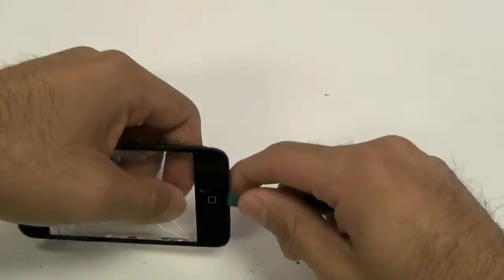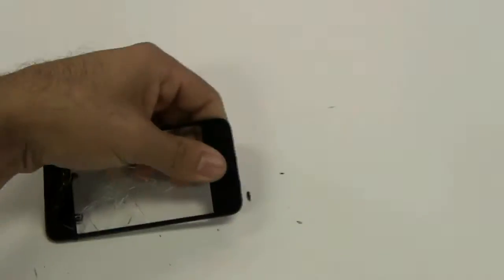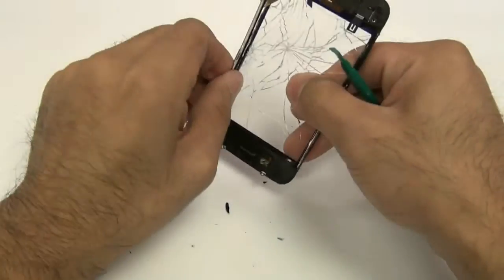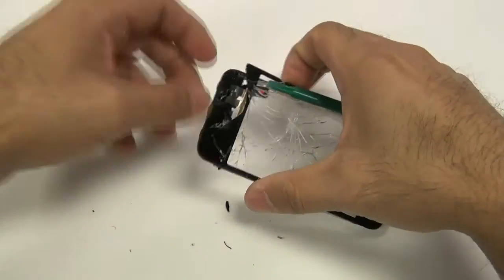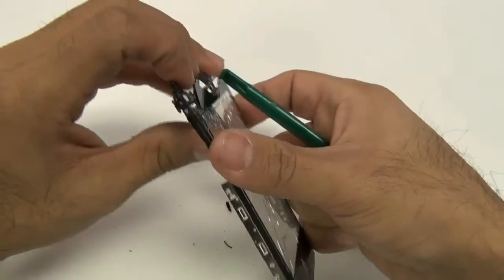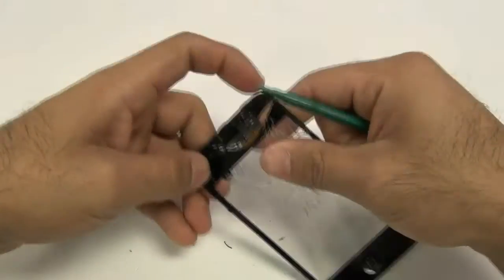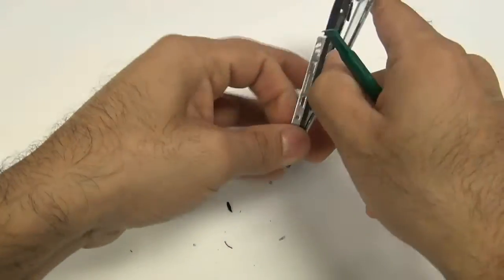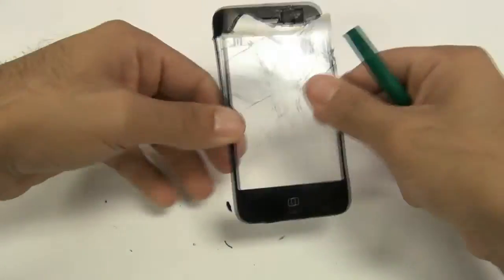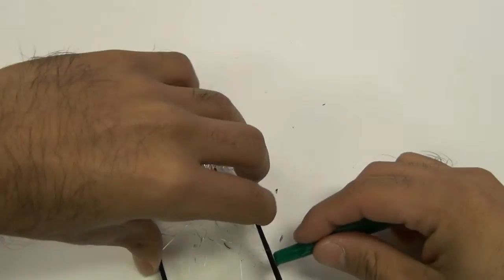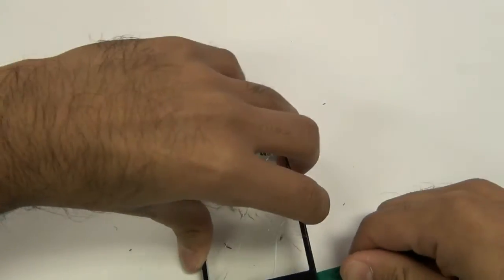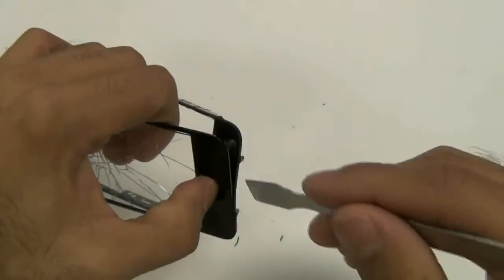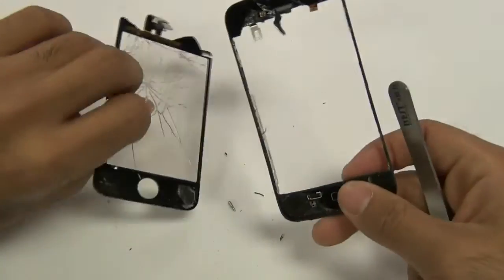Be very careful with broken glass shards, as they can easily cut you. Once you remove the screen, there may be glass shards still attached. Clean up all the glass shards and remove the old adhesive from the mid-frame, as you will be applying new adhesive.